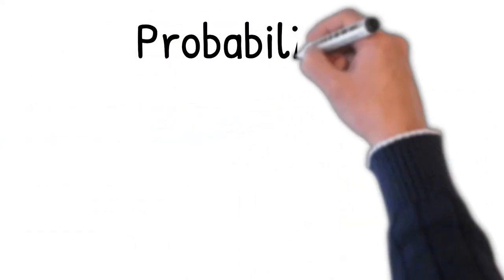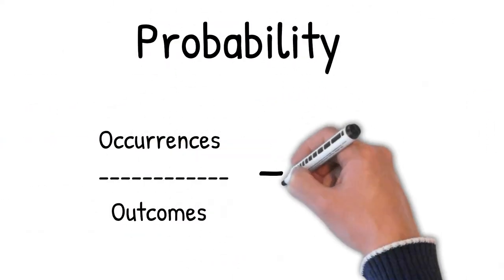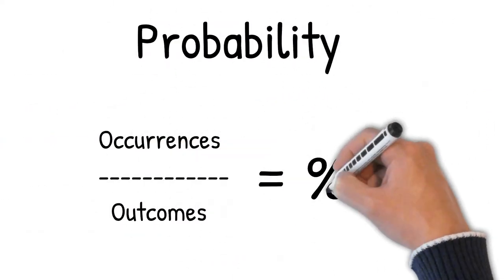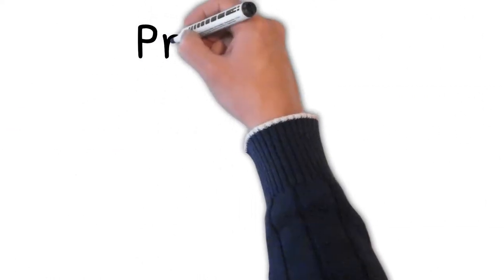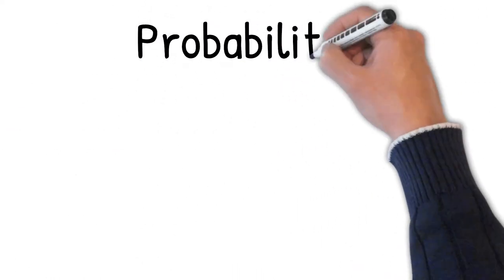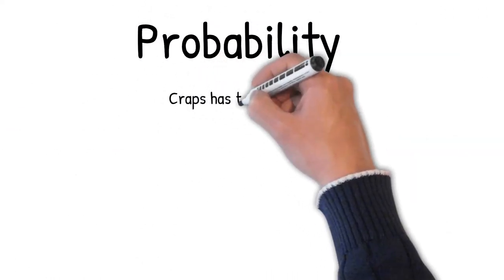Probability expressed as a percentage takes the number of occurrences divided by the number of outcomes. Probability also can be left as a fraction of occurrences over outcomes.